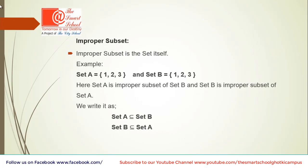Now improper subset. Improper subset is the set itself. Or you can say an equal set of a set is its improper subset. For example, set A equals 1, 2 and 3, and set B equals 1, 2 and 3. Here set A is improper subset of set B and set B is improper subset of set A. We write it as set A, this is sign of improper subset. So set A is improper subset of set B and as well as set B is improper subset of set A. Or very simply we can say that both of these sets are equal set of each other.